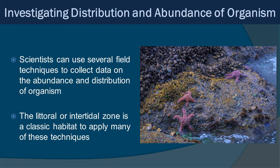Now let's get into investigating the distribution and abundance of organisms — essentially some techniques to count things and understand where they are spatially and how many there are. Scientists can use several field techniques to collect abundance and distribution data. The littoral zone, or intertidal zone along the shoreline, is a classic habitat to apply many of these techniques, and later on in the course we're going to be doing just that.